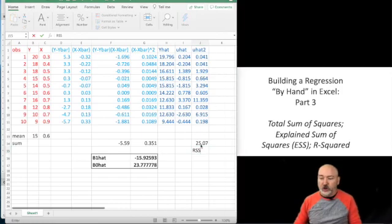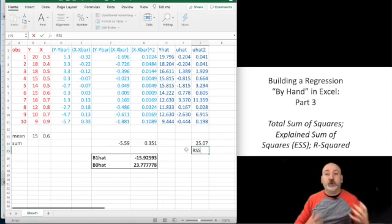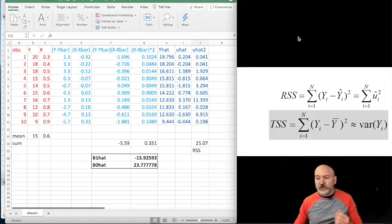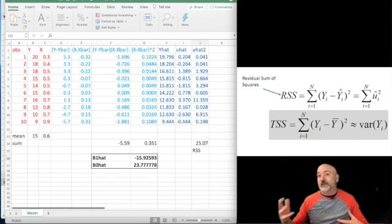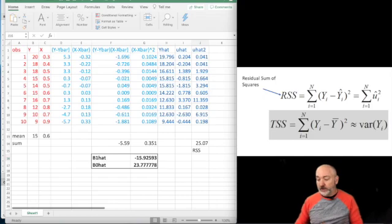Here is the RSS, so we get this value 25.07, and we're not exactly sure what to make of that. So we know that that's as small as it can possibly be, given the observations that we have, by definition of ordinary least squares. But to put it into context, we need these additional measures. So, starting from that RSS, which is kind of the degree to which our model is unable to explain the variation in Y.